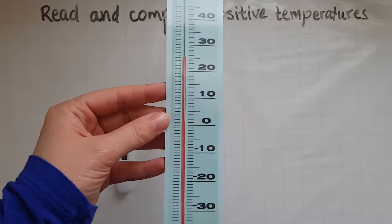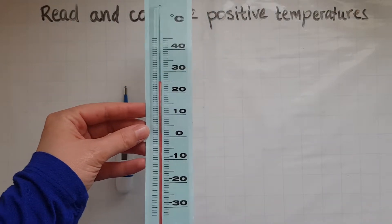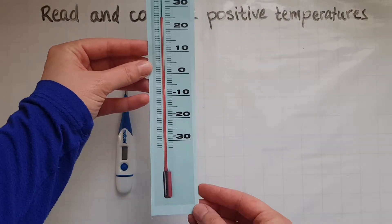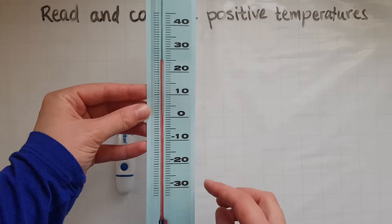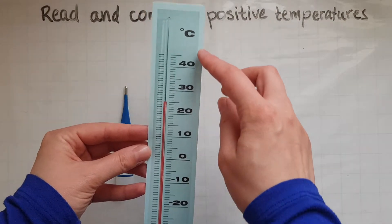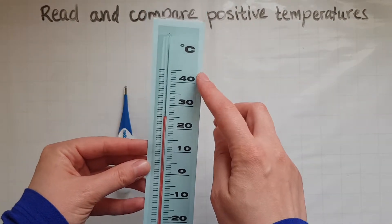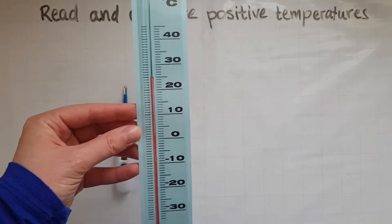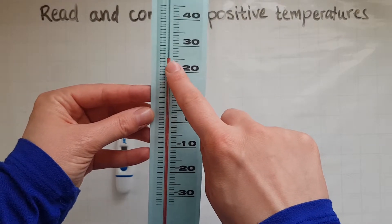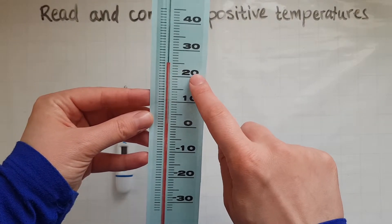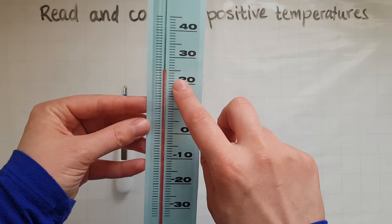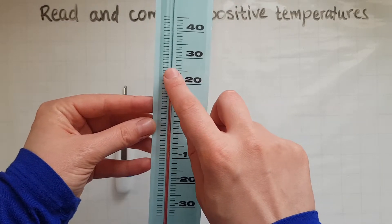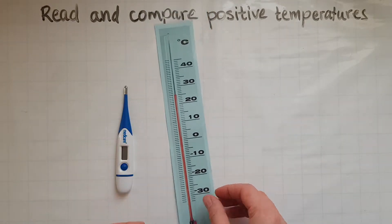A weather thermometer looks pretty much like this where you've got temperatures going up in degrees Celsius. So if you can read the temperature currently, that is in between 20 and 30, so that is 25 degrees Celsius.